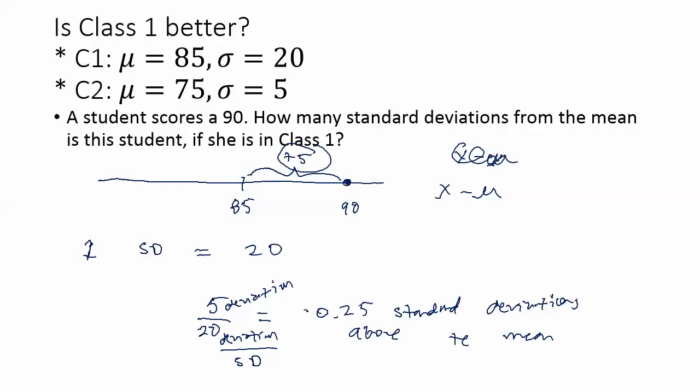So again, 5 deviations, deviation units, and then there are 20 deviation units per standard deviation. And that means that this student wasn't a full standard deviation above or below the mean. They were a quarter of a standard deviation above the mean. So, not bad. It's good to be a positive number of standard deviations with respect to the mean, because that means you're scoring higher than the average.